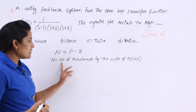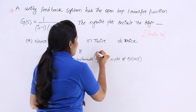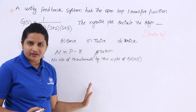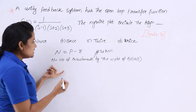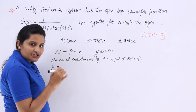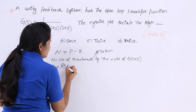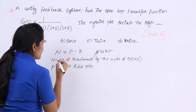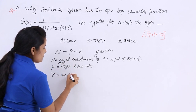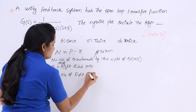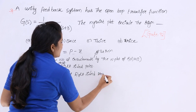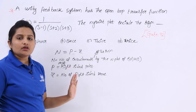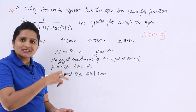Here, P is the number of right-sided poles and Z is the number of right-sided zeros. By taking the number of right-sided poles minus the number of right-sided zeros, you can find out how many times the Nyquist plot is going to encircle the origin.